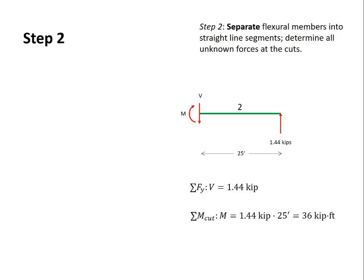Sum of the moments about the cut tells us that the moment is equal to the vertical force of 1.44 kips times the moment arm of 25 feet which results in a moment of 36 kip feet. So now we carry these values onto the diagram. Now that we have a fully solved diagram we move to the next member.